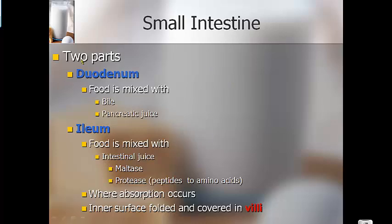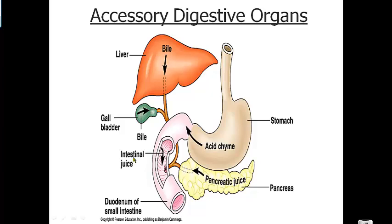Your small intestine has two parts: the duodenum is where bile and pancreatic juice are added to break the food down further into nutrients. Further down is the ileum, where the food is actually absorbed. Bile comes through a tube into the duodenum, pancreatic enzymes come through another tube into the duodenum, and gallbladder bile also enters the duodenum. Everything gets broken down in the duodenum and is absorbed as it travels through the ileum.